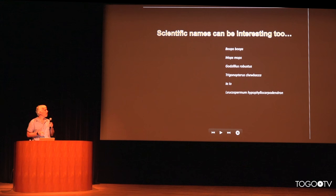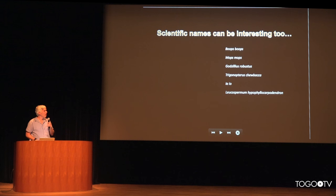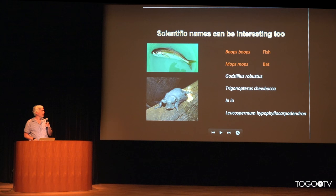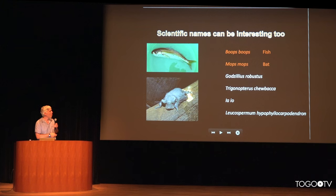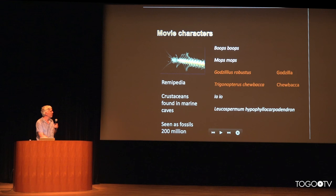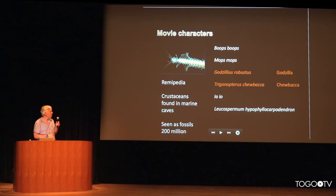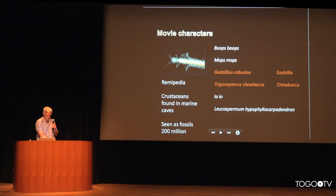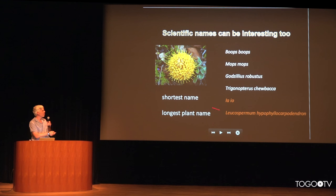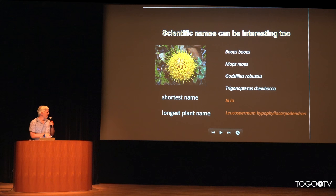There are a number of interesting scientific names in our database. Here's one — Boops, which is a fish. Here, Mops, which is a bat. We have specific species named after movie characters — one named after Godzilla, a crustacean found in marine caves seen in fossils 200 million years ago. There's another species named after Chewbacca, a Star Wars character. We also have very short names, such as Ayo, another bat species. And then there is a very long Leucospermum species name which I will not try to read.